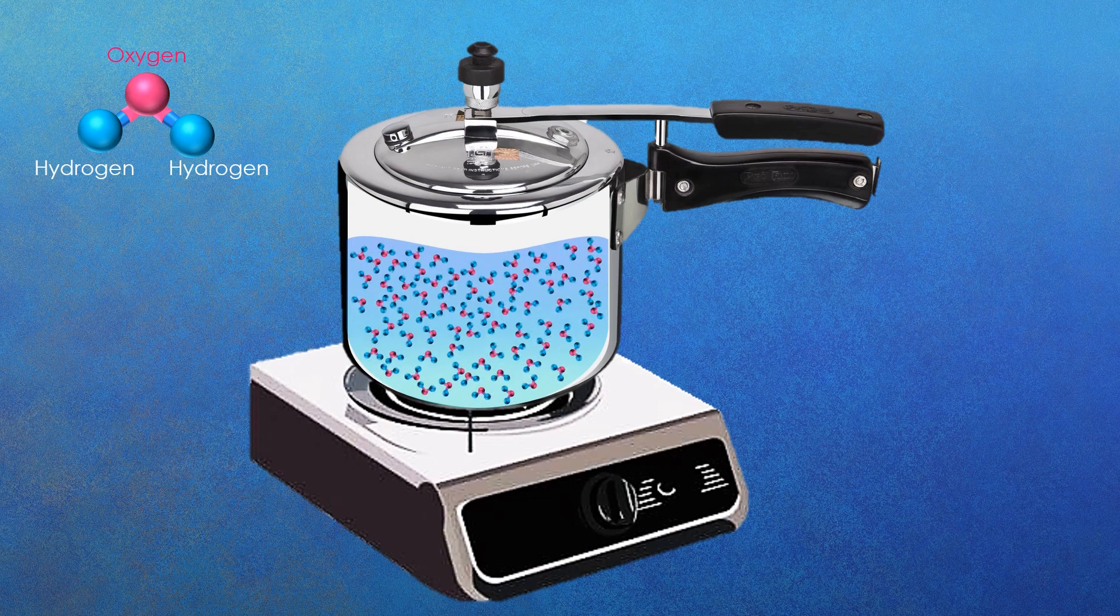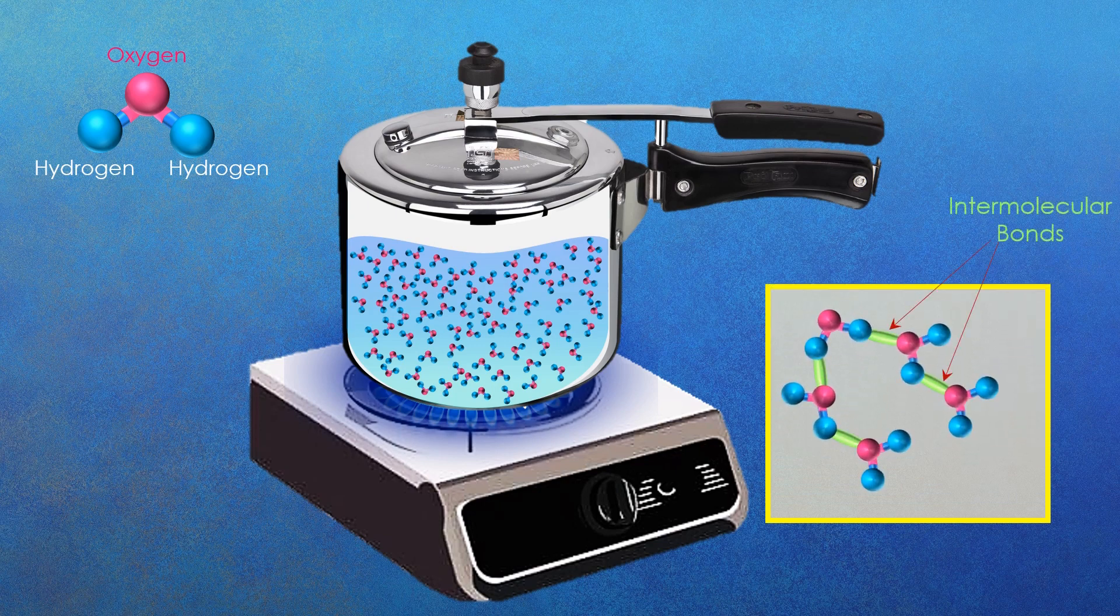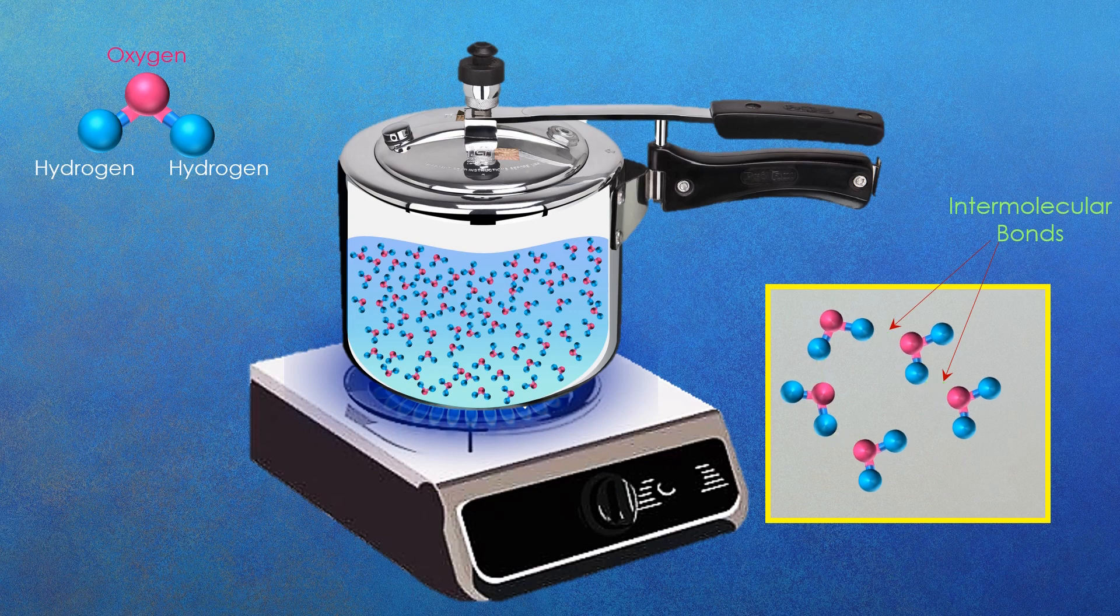When we apply heat to the cooking vessel, this heat gets transferred to the water molecules close to the bottom due to which the intermolecular bonds between the liquid molecules breaks and they gain high amounts of kinetic energy and convert to gaseous phase.